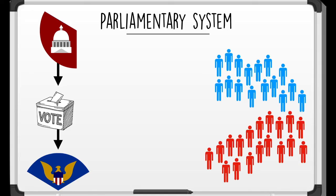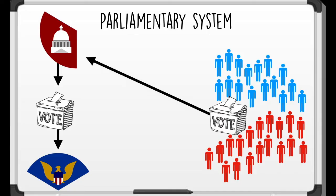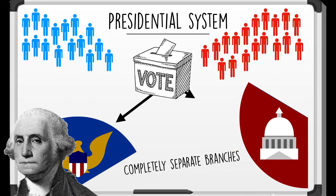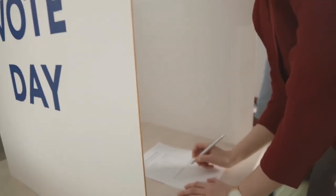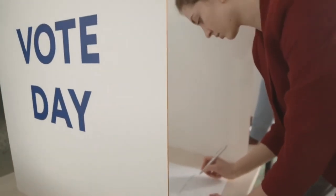The people actually get to vote for the lawmakers, those that work in the legislative branch. So you can see the differences between these two systems has a lot to do with the executive and legislative branch, but also has a lot to do with voting — how do people vote for elected leaders?